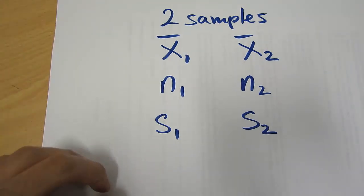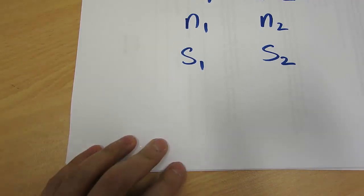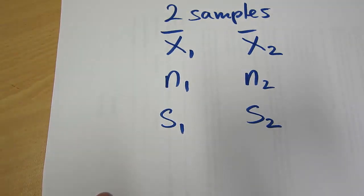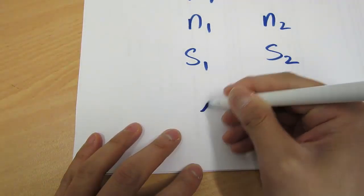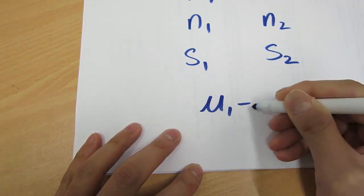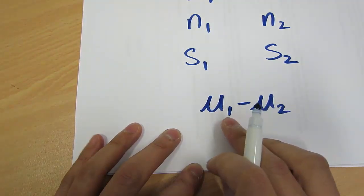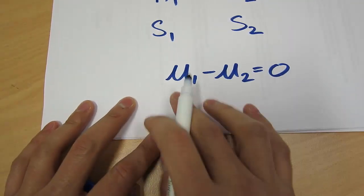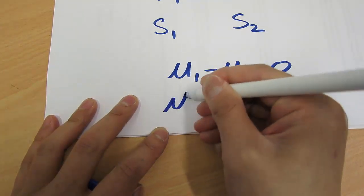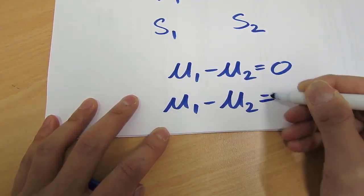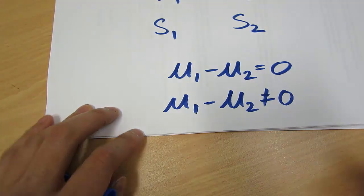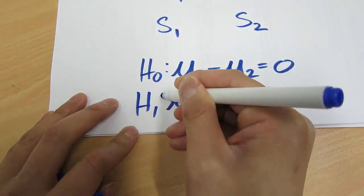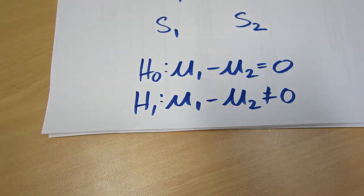Let's set up what the null and alternate hypothesis would look like. If we wanted to simply see whether these two averages are equal to each other or not, we would say that the population mean of sample one minus the population mean of sample two must equal zero — that's the null hypothesis. If they're not equal, the opposite must be that they're not equal to zero, which is the alternate hypothesis.